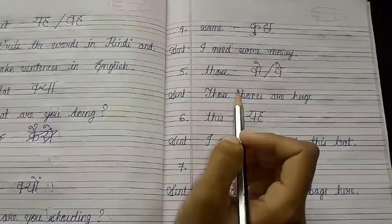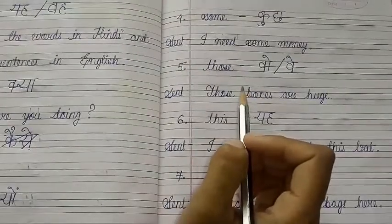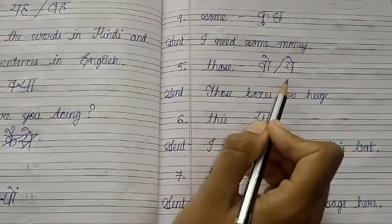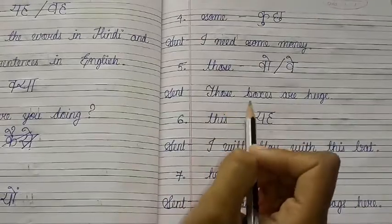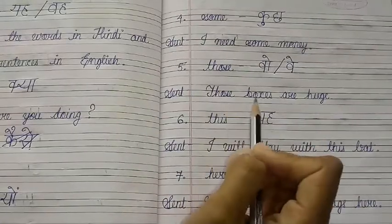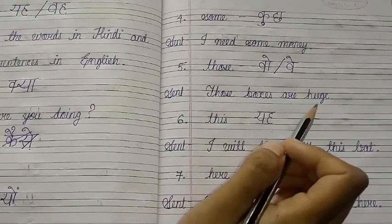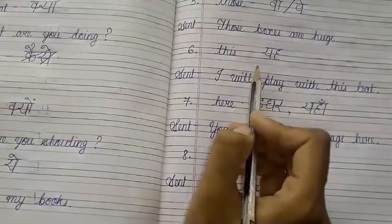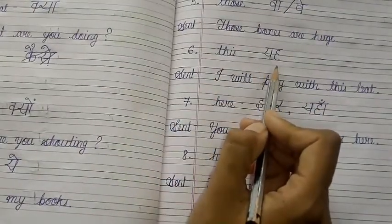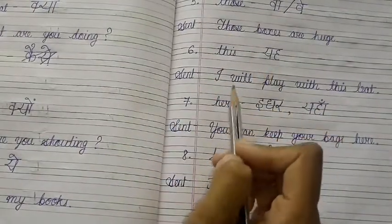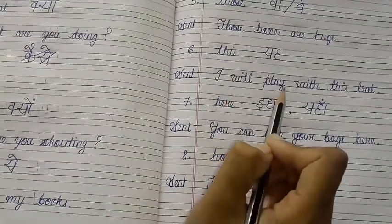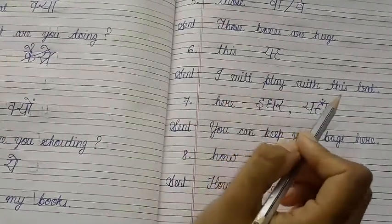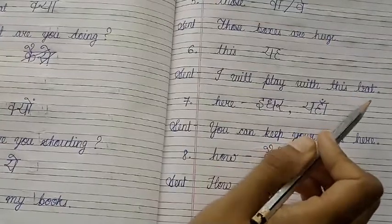Then number 5: 'those' — its translation is 'wo' or 've'. The sentence is: Those boxes are huge. Next, number 6 is 'this' — it translates to 'yeh'. The sentence is: I will play with this bat.